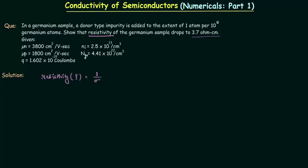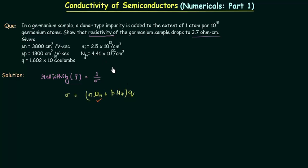Conductivity sigma is given as: (n·mu_n + p·mu_p) × q. Now, small n is the concentration of electrons — that is not given, we have to calculate it. Mu_n is the mobility of electrons and is given. Small p is also not given and we have to calculate it. Mu_p is given, and small q, the charge on one electron, is also given. So we have to find out small n and small p in order to find the conductivity.